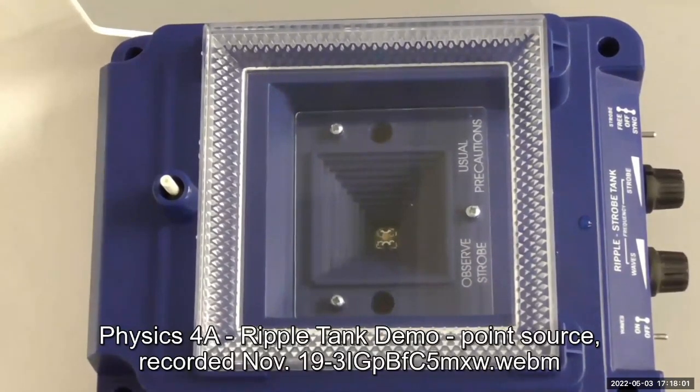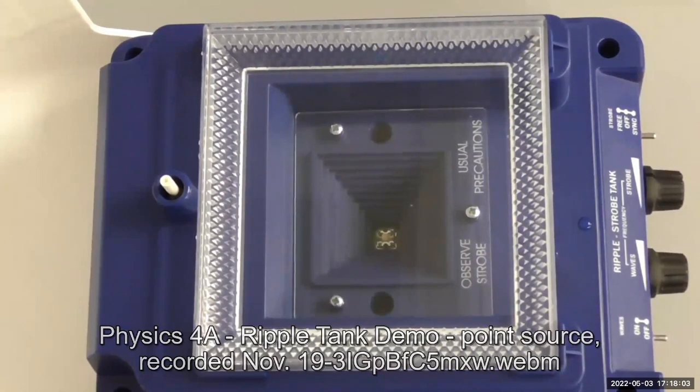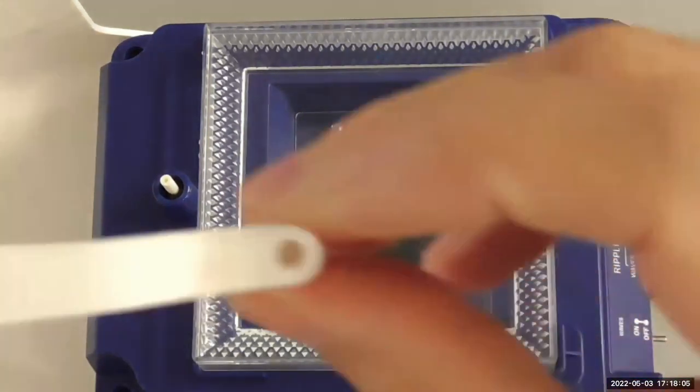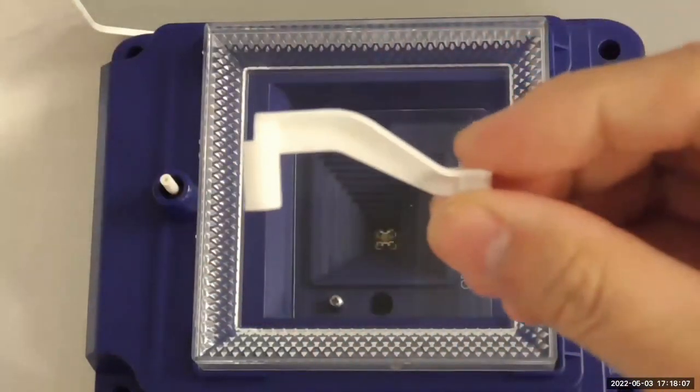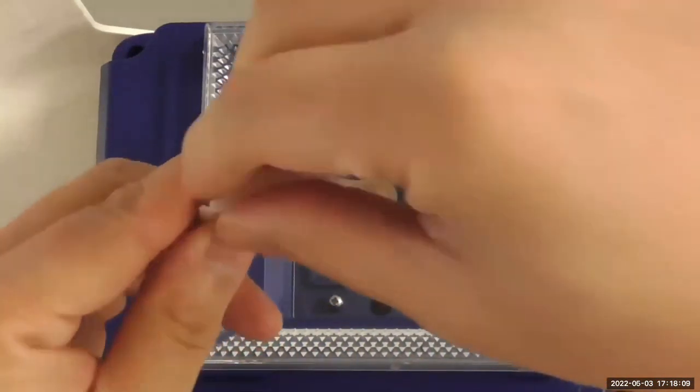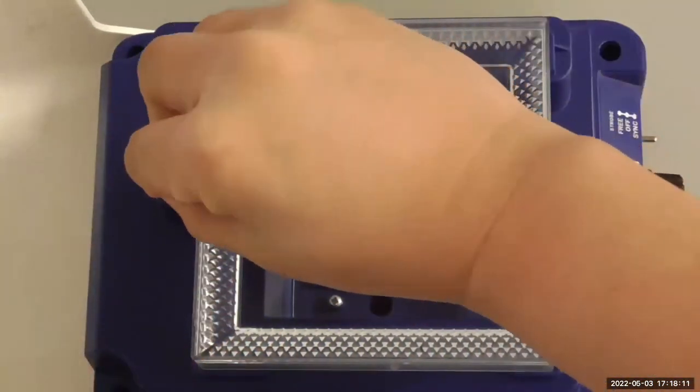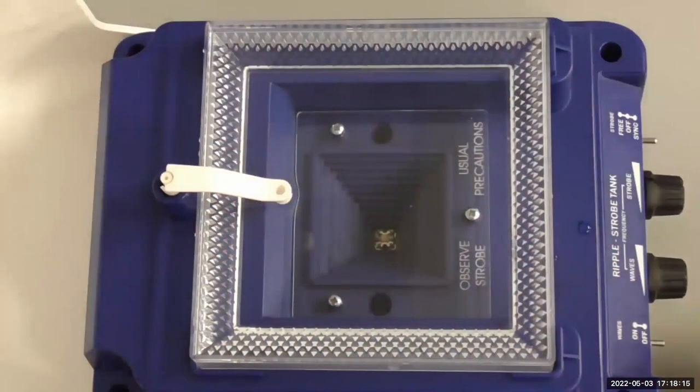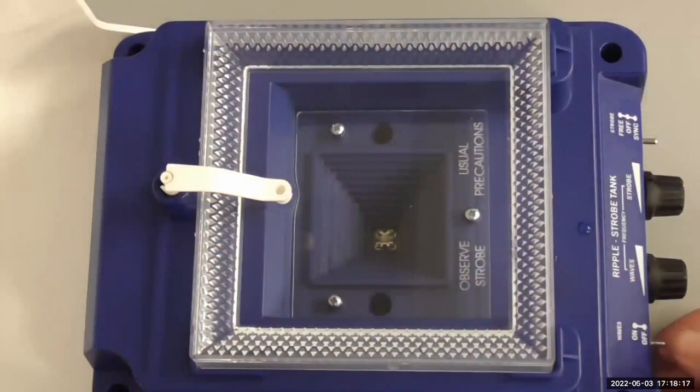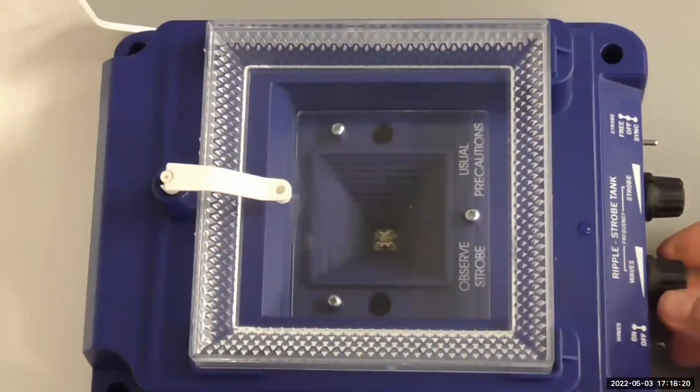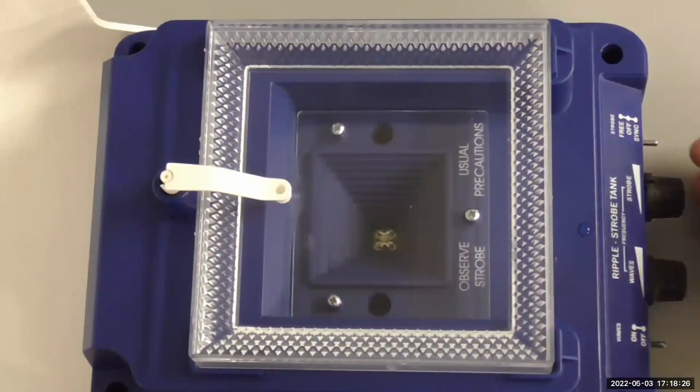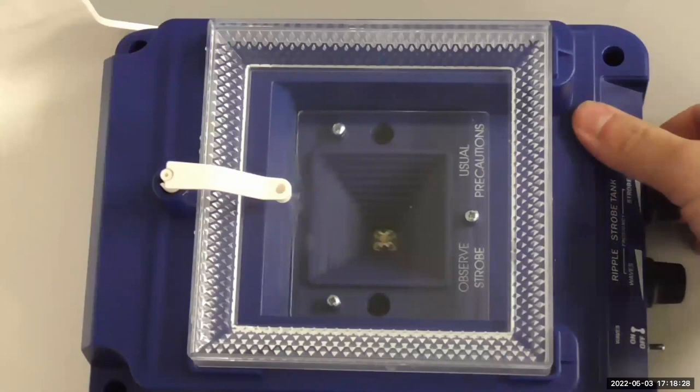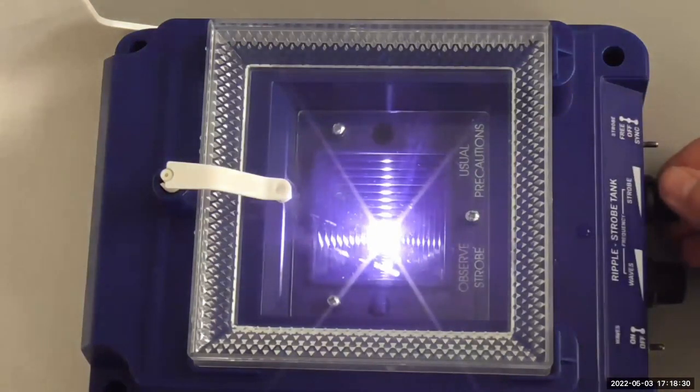Yeah, so there's an attachment that will go on that stick that will provide us a point source of water waves. So you hear something vibrating and if you look at the water very carefully, I think you can see it vibrating, but it's not a very good look. That's what the strobe light is for.